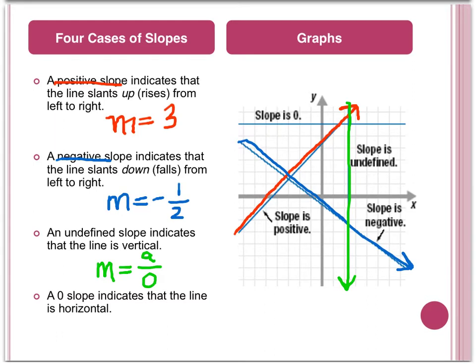And lastly, we have a slope of zero, and this is any horizontal line. If we were to solve for m, m would equal zero divided by any number a.